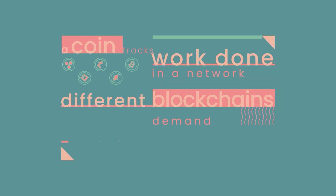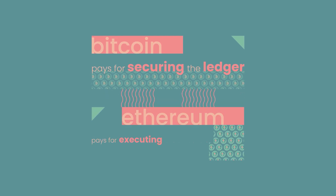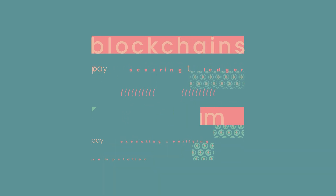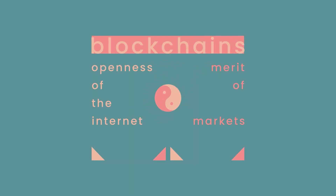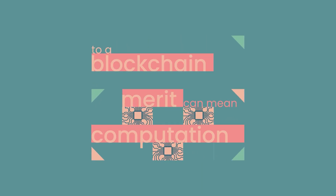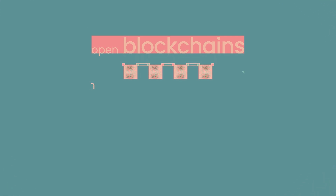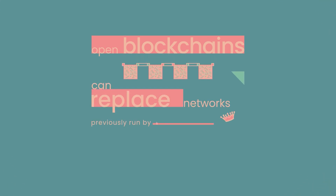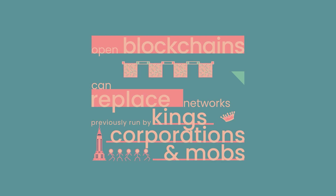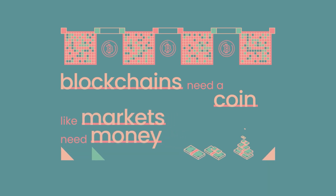Different blockchains demand different work. For example, Bitcoin pays for securing the ledger, while Ethereum pays for executing and verifying computation. Blockchains combine the openness of the internet with the merit of markets. Merit can mean security, computation, prediction, storage, distribution, and content to a blockchain. Blockchains port the market model into places where it couldn't go before. Open blockchains and merit-based markets can replace networks previously run by kings, corporations, and mobs. It's nonsensical to have a blockchain without a coin, just like it's nonsensical to have a market without money.